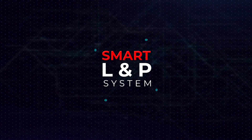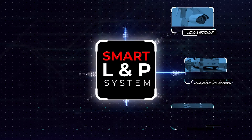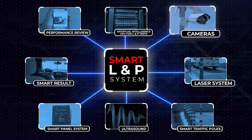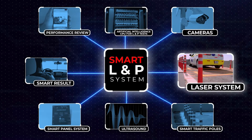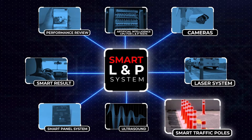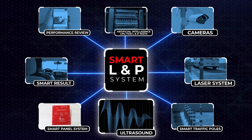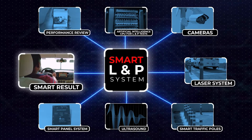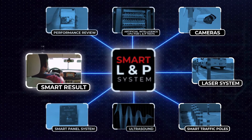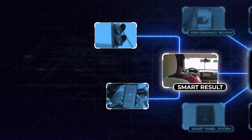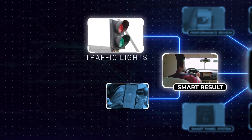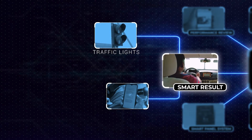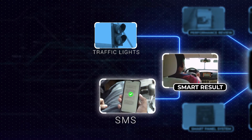The smart LMP system consists of the following tools: cameras, laser system, smart traffic poles, ultrasound, smart panel system inside the car. Smart LMP test results are displayed on the spot through the following methods: physically through traffic lights, and once the applicant reaches the end line, through an SMS on the registered phone number.